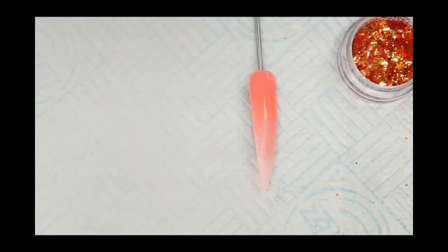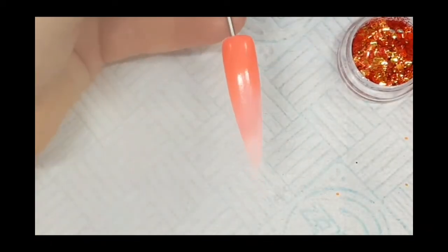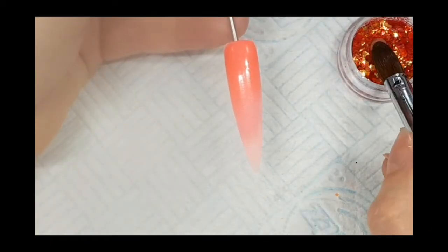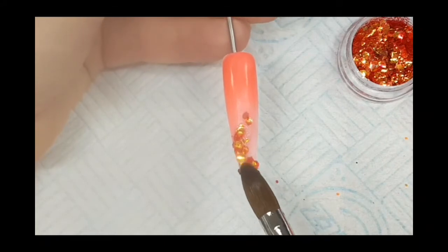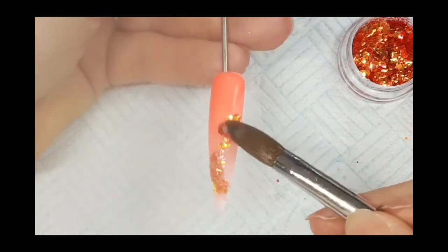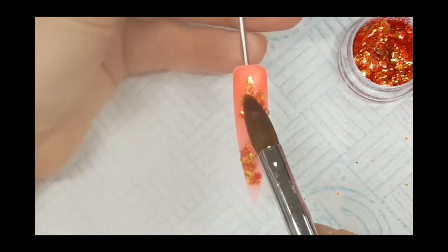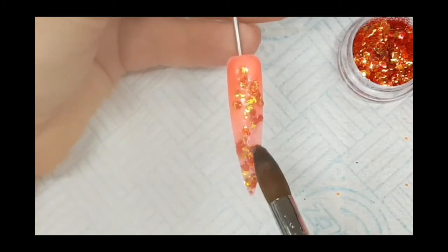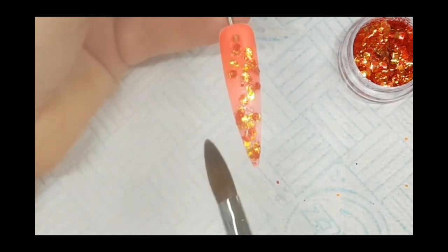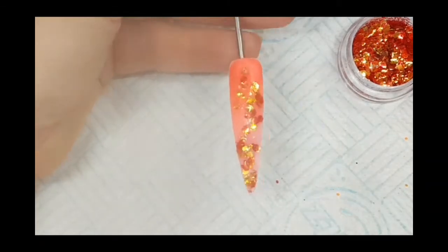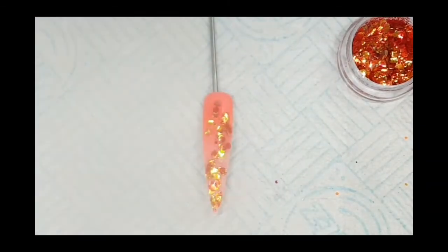So I have applied a small bead of the Glam and Glitz acrylic powder and very quickly blended it back down onto itself. Whilst it's still wet, I've picked up a clear bead of NSI Totally Clear and just dipped it into the Autumn Sunset glitter and tapped into place. I'll leave this to set up for a few minutes.